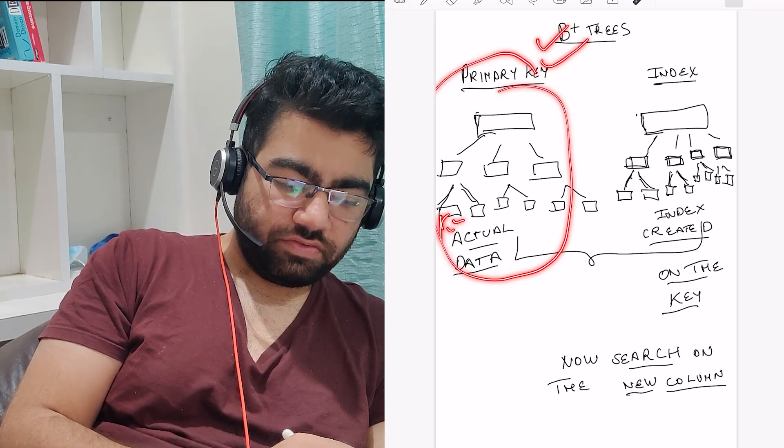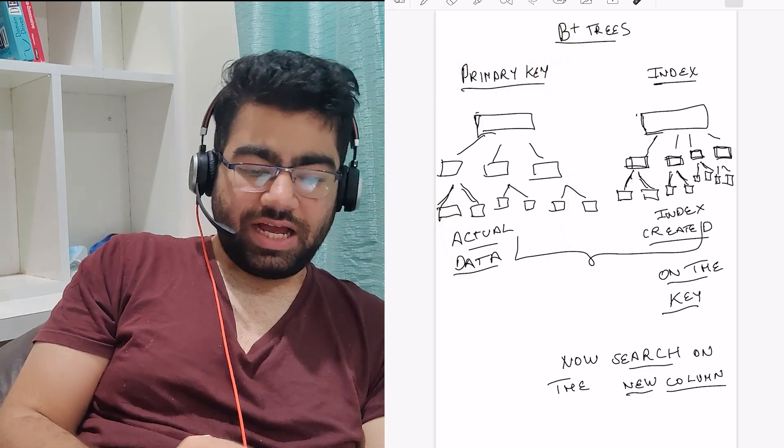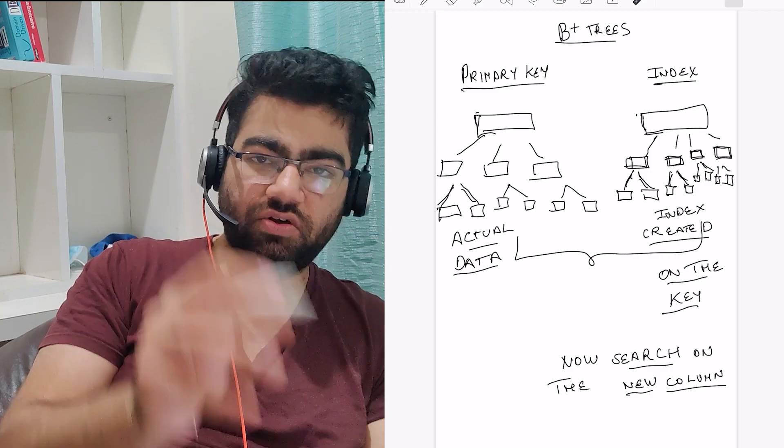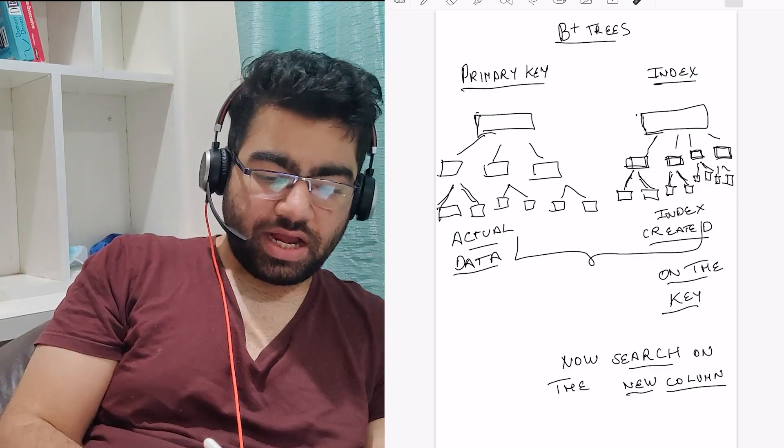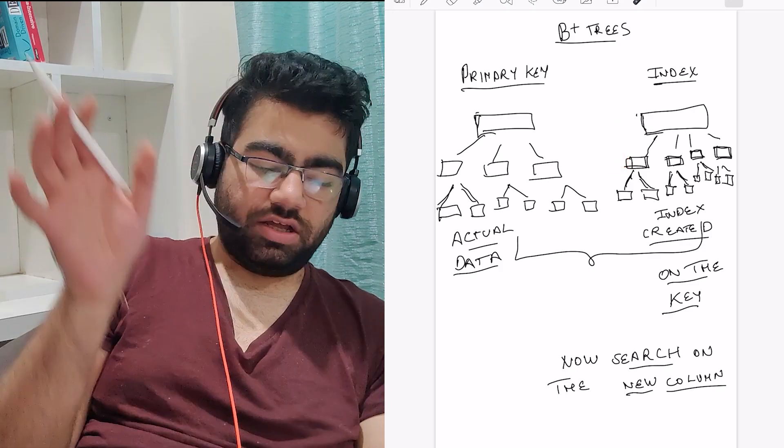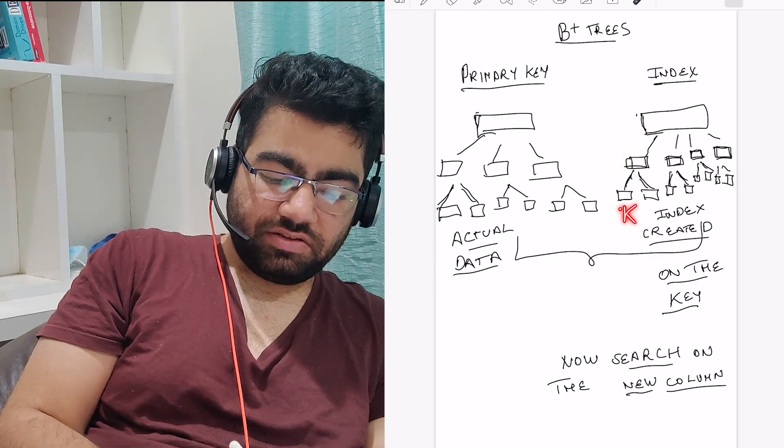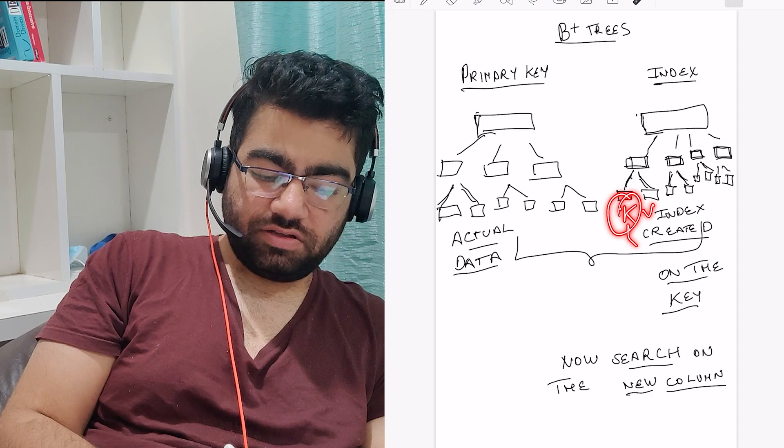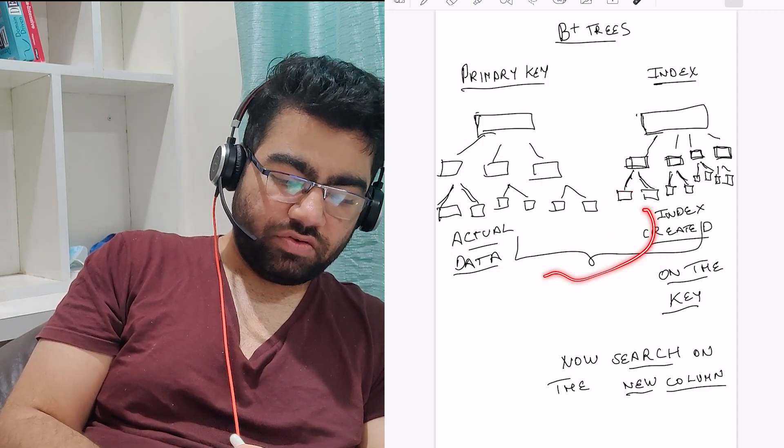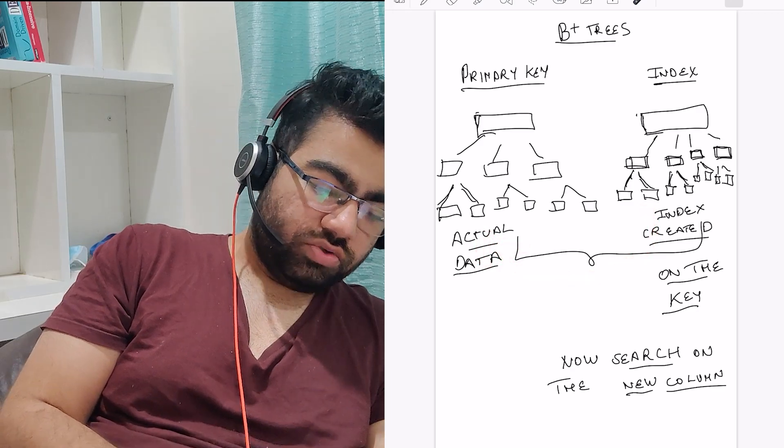You have the main B+ tree which contains actually the data - the key and value stored in the leaf node. Then there are the index trees. In this, the index is created on the basis of the column that you have chosen. On the basis of that it creates the nodes and the complete tree.